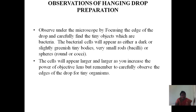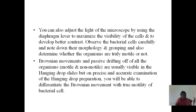Observations of hanging drop preparations: observe under the microscope by focusing the edge of the drop and carefully find the tiny objects which are bacteria. The bacterial cells will appear either as dark or slightly greenish tiny bodies — very small rods called bacilli or round spheres called cocci. The cells will appear larger as you increase the power of the objective lens. You can adjust the light by using the diaphragm lever to maximize the visibility of the cells and develop better contrast. Observe the bacterial cells carefully and note their morphology and grouping, and also determine whether the organisms are truly motile or not.